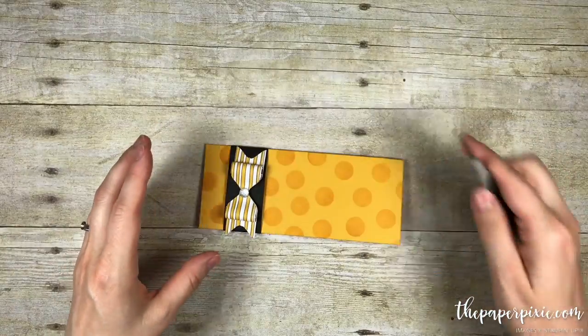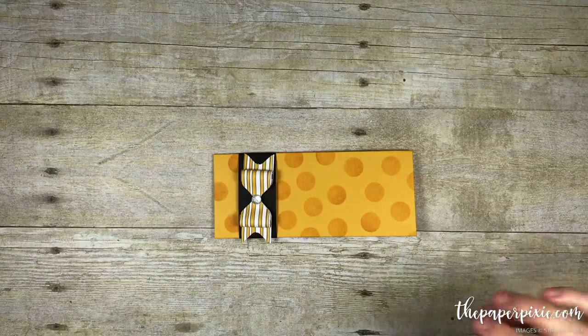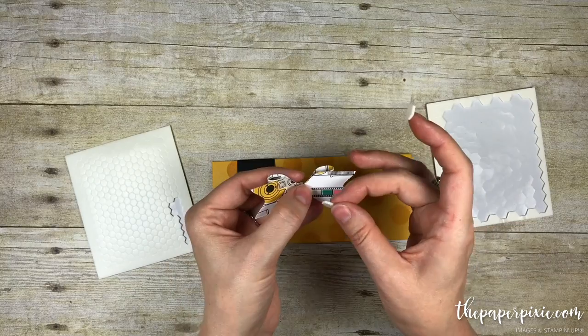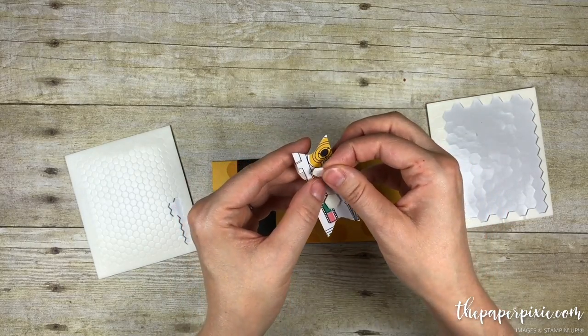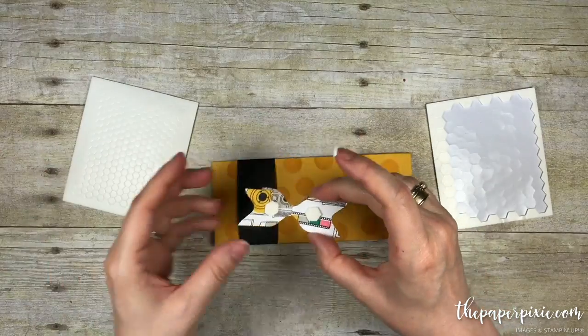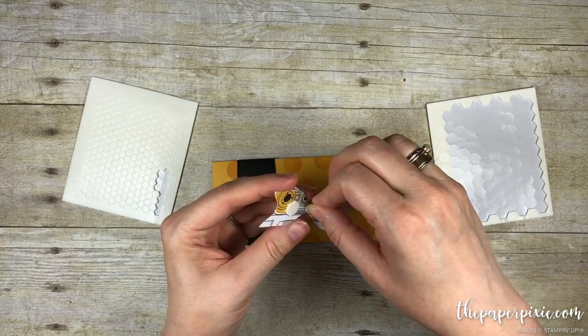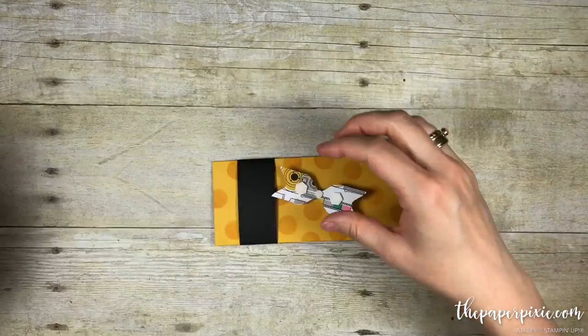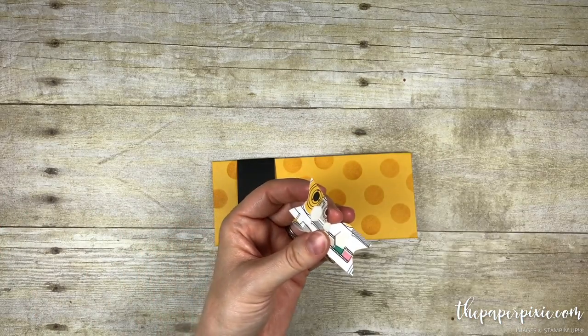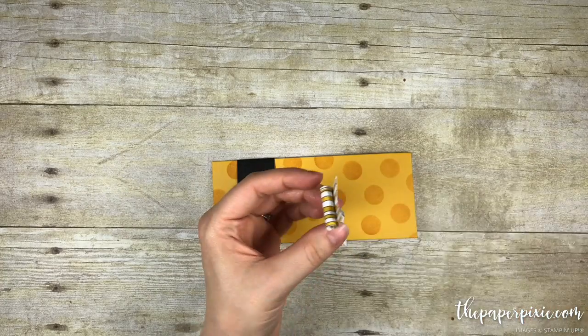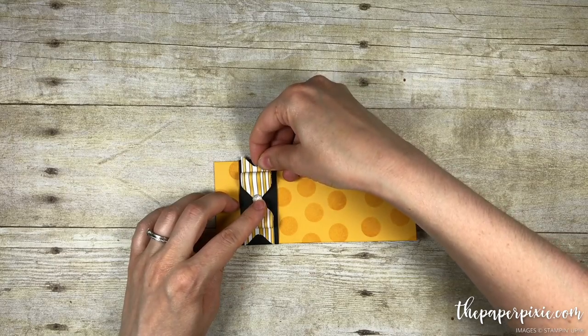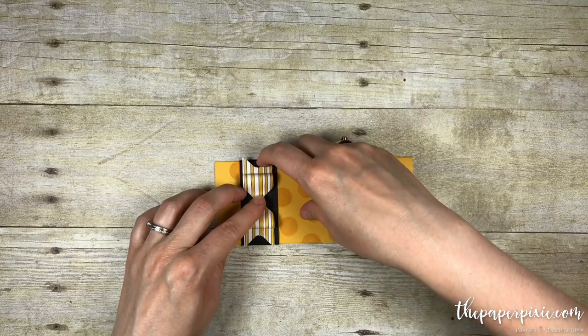We are going to add this to our belly band using Stampin' Dimensionals. Using two of the regular sized ones on either side of the loops and then one mini dimensional right in the center of that bow. I am just going to pop that right on the envelope there.